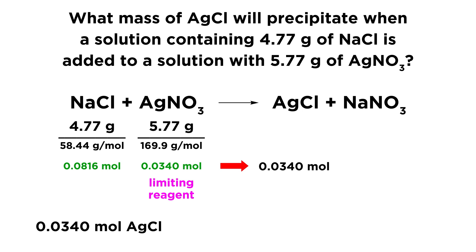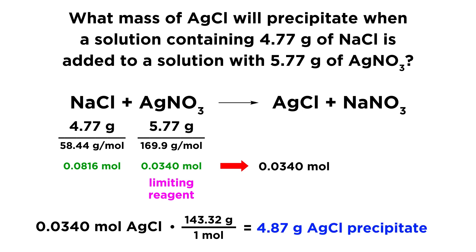Now it's very simple — we have the moles of precipitate we're going to form, and all we need to do is convert that back into grams. We take our 0.034 moles of silver chloride and multiply by 143.32 grams per mole, which is the molar mass of silver chloride, and that gives us 4.87 grams of precipitate. That will be the mass of precipitate that we get.